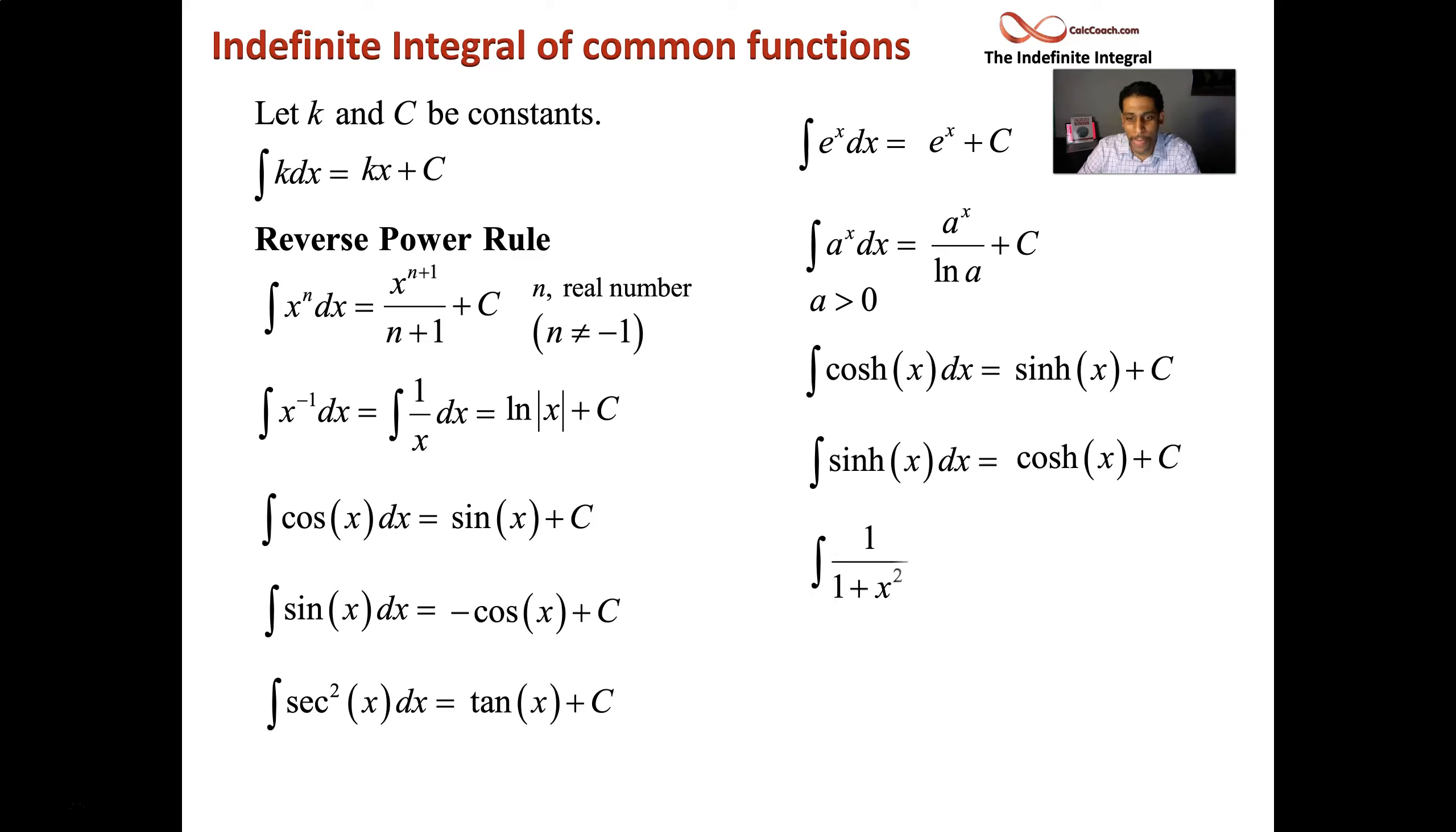1 over 1 plus x squared. What function has 1 over 1 plus x squared as its derivative? Arctan of x. Other inverse trig functions: this one is arcsine, and when there's a negative on there, it's arccosine.